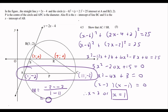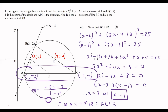Now computing the gradient of AC using A(1, -2) and C(11, -2): (-2 - (-2)) / (1 - 11) = 0. The gradient of AC equals zero, which is exactly the same as the gradient of SR. Therefore the gradient of AC equals the gradient of SR, so AC must be parallel to SR.